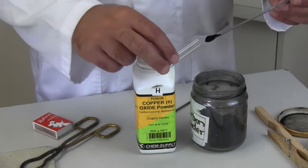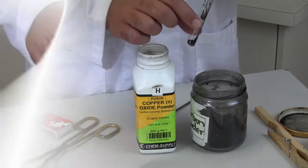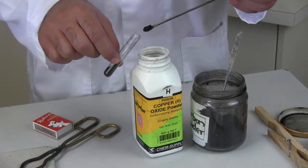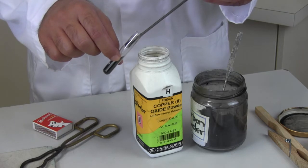If I take some carbon powder and mix it with some powdered copper oxide—basically the same stuff I just produced but crushed into a powder—and then heat the mixture, a different chemical reaction occurs.